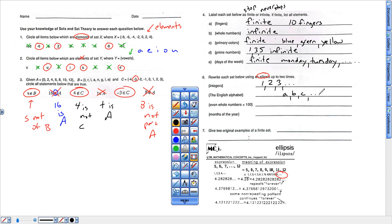Even whole numbers less than 100. Maybe you're talking 98, 96, 94, but dot, dot, dot, keep going on forever. Even whole numbers less than 10. Months of the year, so January, February, March, and then dot, dot, dot. That's my little ellipsis.